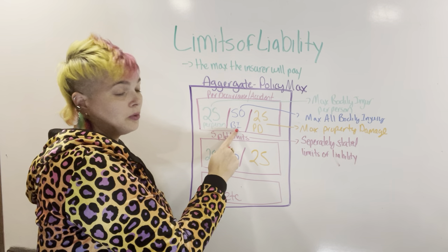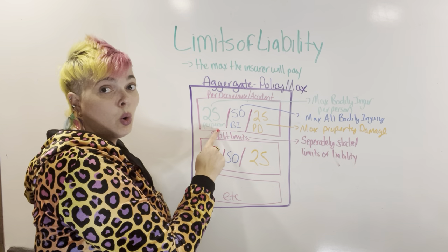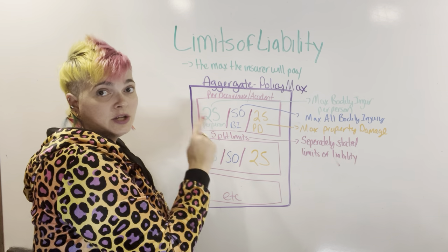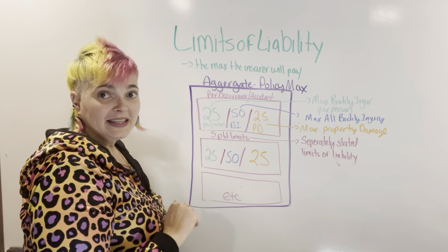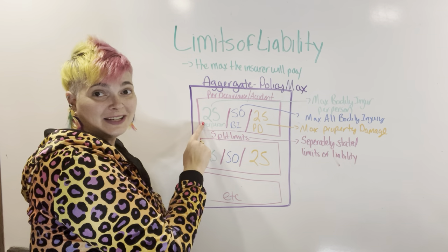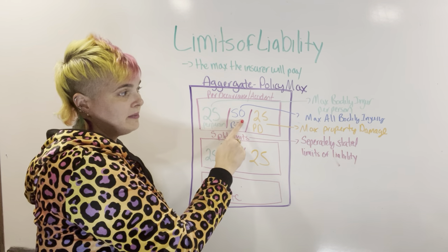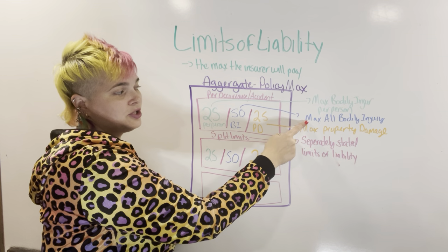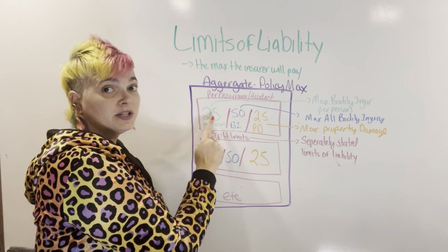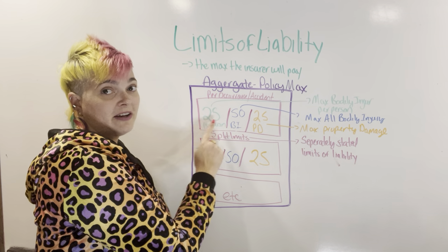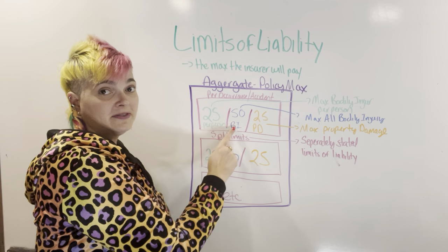You have $50,000 total bodily injury, and each person gets up to $25,000 but can never get more than $25,000. So even if you hit one person and their medical bills were $30,000, and you've got $50,000 available, you can still only give them $25,000 because that's the per person limit. Each person is able to get up to $25,000 of the $50,000 — it's not $25,000 plus $50,000; it's $25,000 per person for a total of $50,000 available.